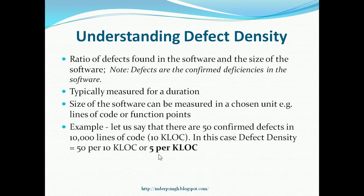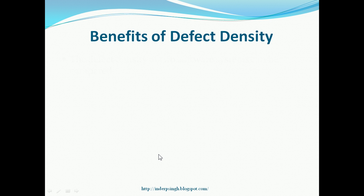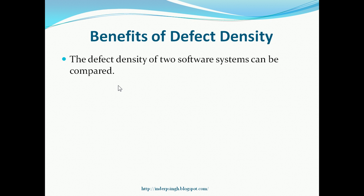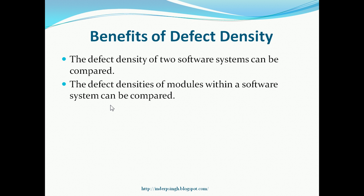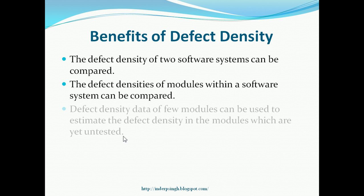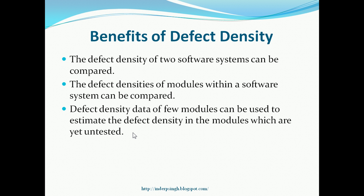Let us see the benefits of measuring Defect Density. The Defect Density of two software systems can be compared, providing an indication as to which system has higher quality and which has lower quality. Even the Defect Densities of modules within a software system can be compared, providing data on which modules have higher quality than others. The Defect Density data of a few modules can also be used to estimate the Defect Density in modules that are yet untested.